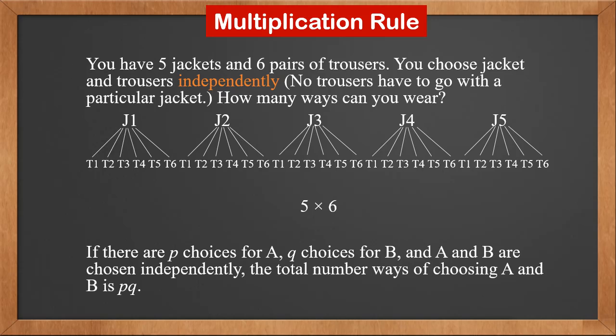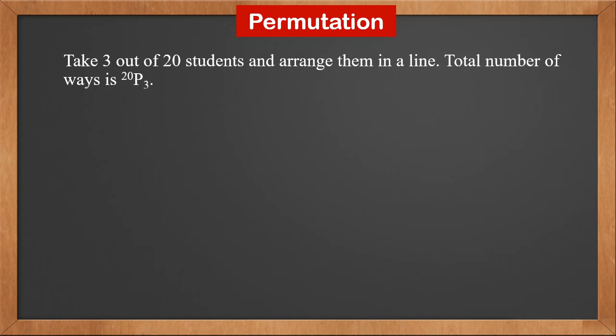Multiplication rule says, if there are P choices for A, Q choices for B, and A and B are chosen independently, the total number ways of choosing A and B is P times Q. Now we can calculate permutation.